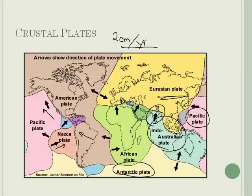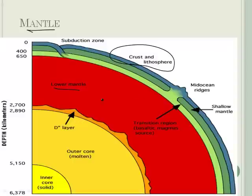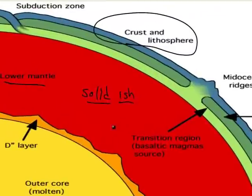Now let's talk about the mantle. The crust is on top, and beneath it is the mantle — there's a lower mantle and an upper mantle. The mantle is an interesting thing: it is a solid, but sort of a solid-ish. It has the consistency of jello — jello is a solid, but it's a squishy solid. So it isn't like a hard rock such as granite; it's a sort of jello-like consistency.